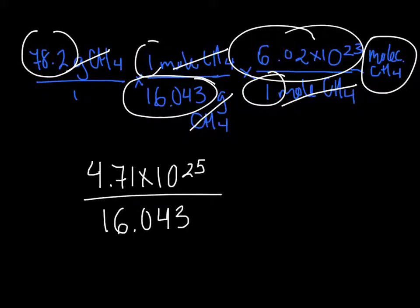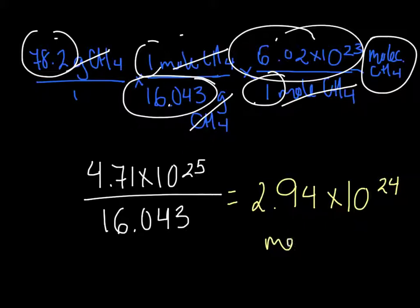So when I multiplied the numbers on the top, I got 4.71 times 10 to the 25th. Now I'm going to divide that by the numbers on the bottom. So divide it by 16.043, and that number when I plug it into my calculator is going to come out to 2.94 times 10 to the 24th power, and our unit is molecules of CH4.